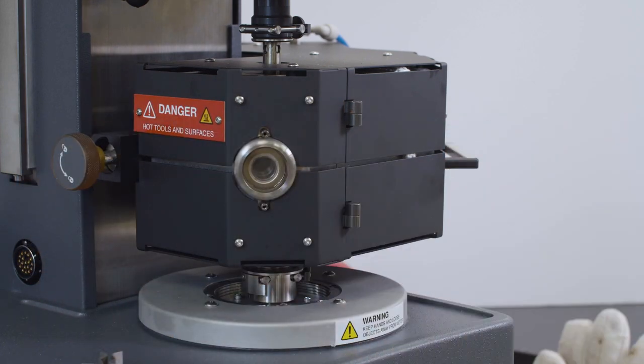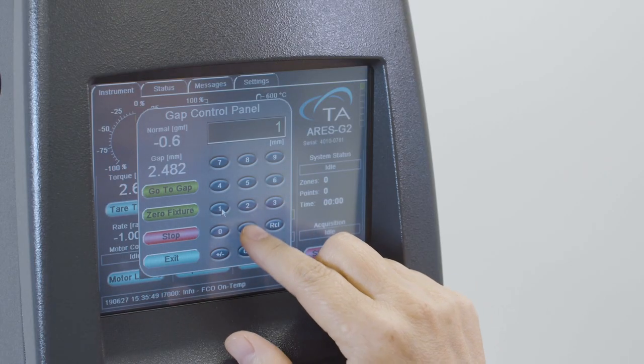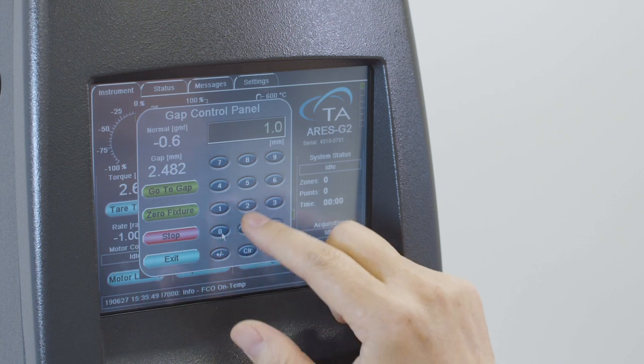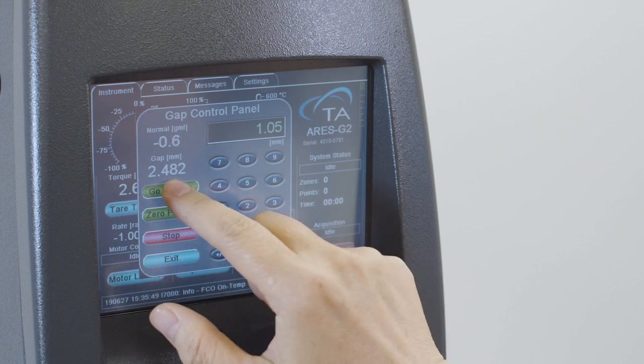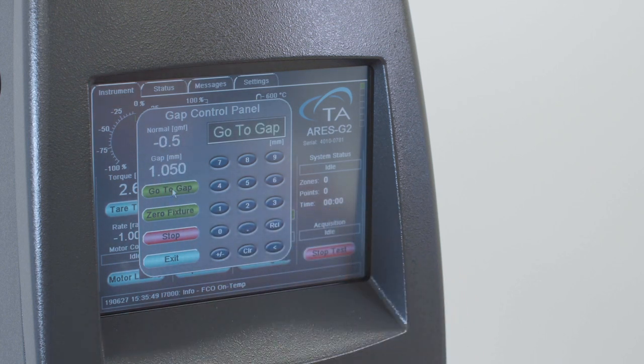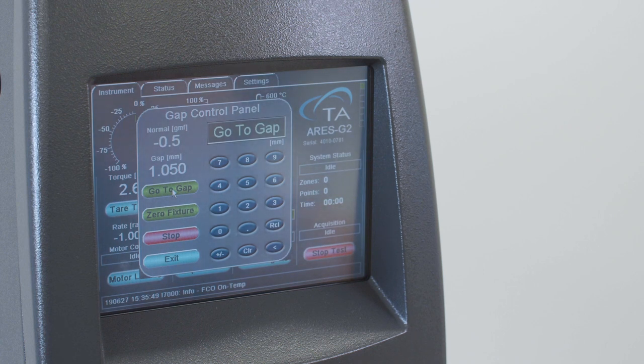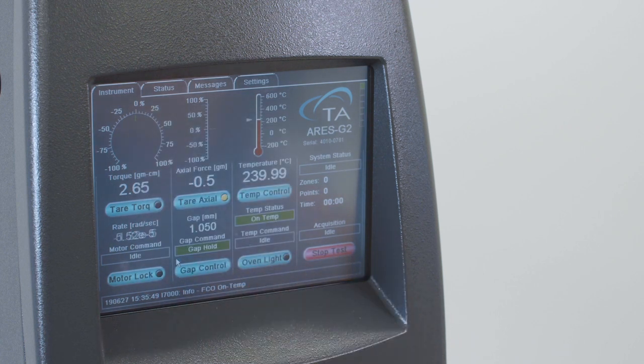Use the instrument touch screen or the TRIO software to set the geometry gap to be 5% above your measurement gap. For example, if your measurement gap is 1 mm, then you set the gap to be at 1.05 mm.